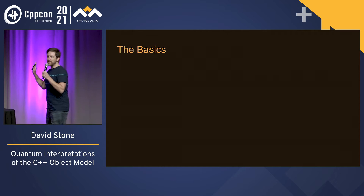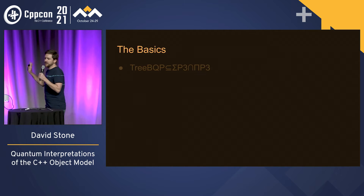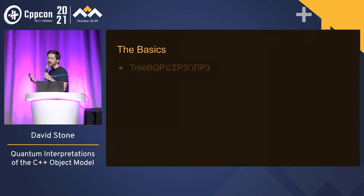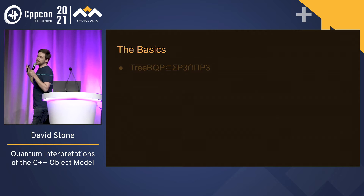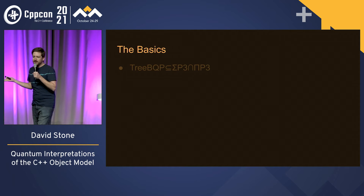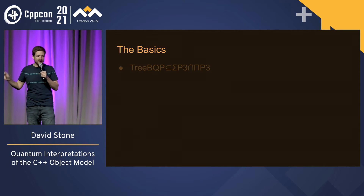First, the basics. I expect you all pretty much know this. So, tree BQP is a subset of the third level of the polynomial hierarchy pH.